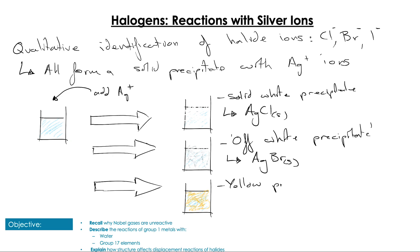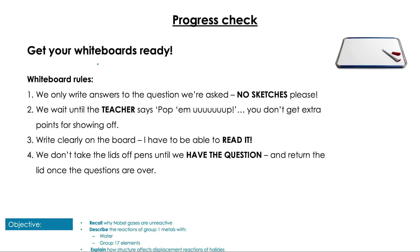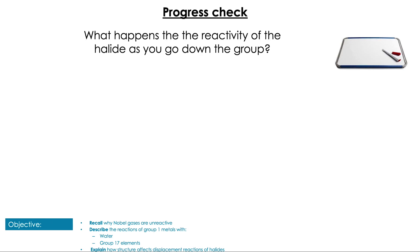If the precipitate we formed is yellow, that is the formation of AgI and tells us there were I- iodide ions in the solution.